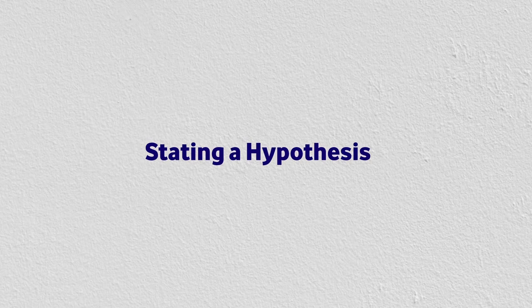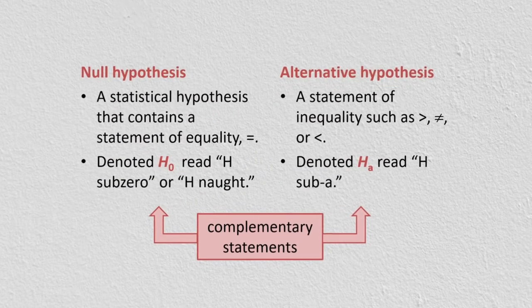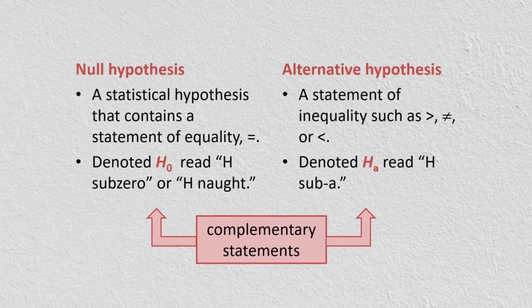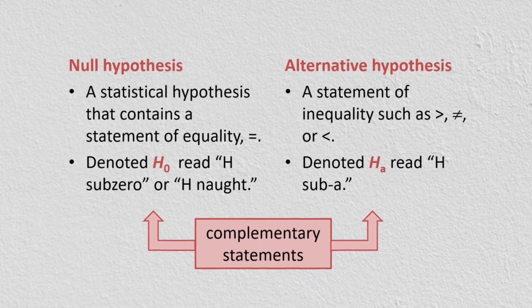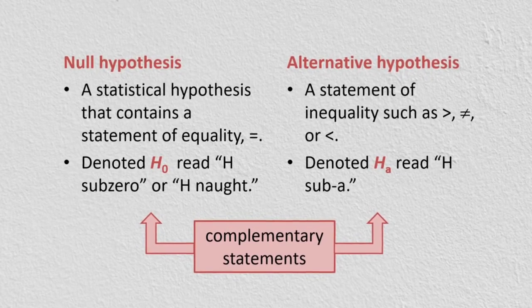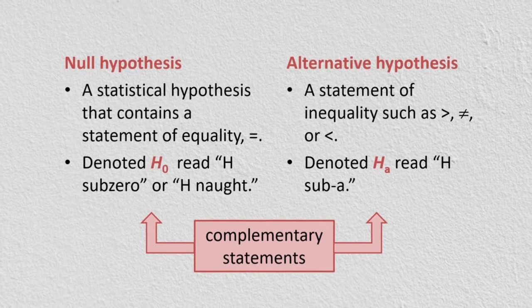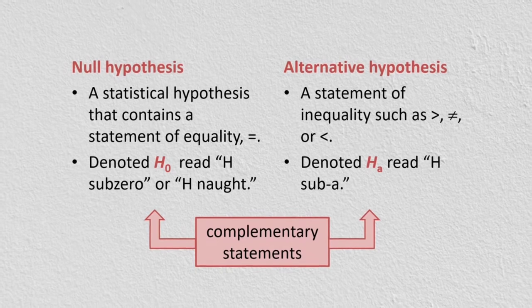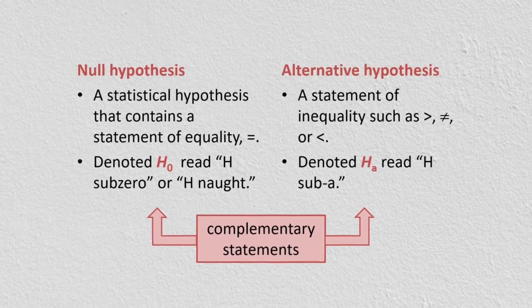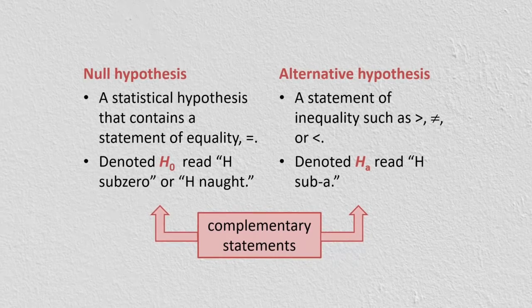The null hypothesis contains a statement of equality, denoted H₀ (H sub 0). The alternative hypothesis contains a statement of inequality — greater than, not equal to, or less than — denoted Hₐ or H₁. The null and alternative hypotheses are complementary statements: if one is true the other is false, and vice versa.